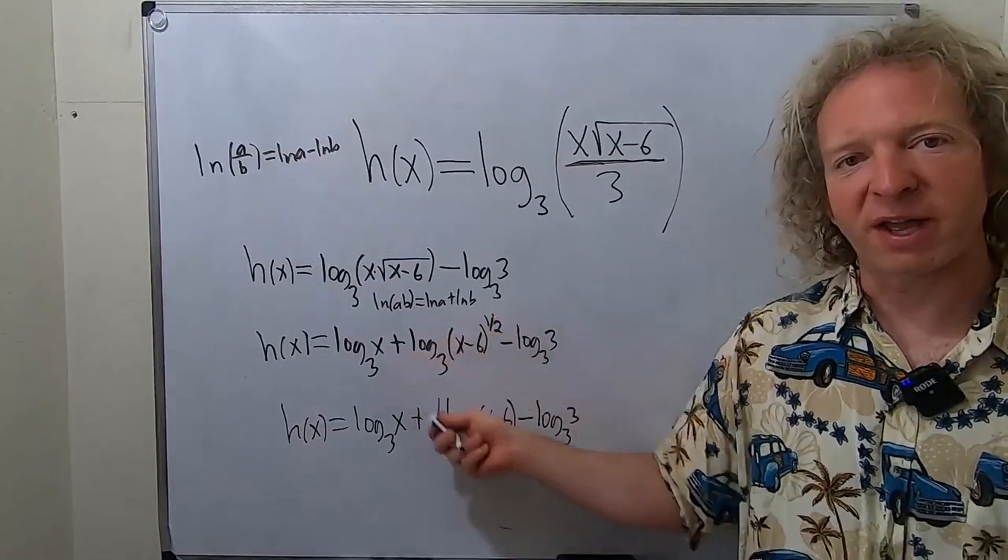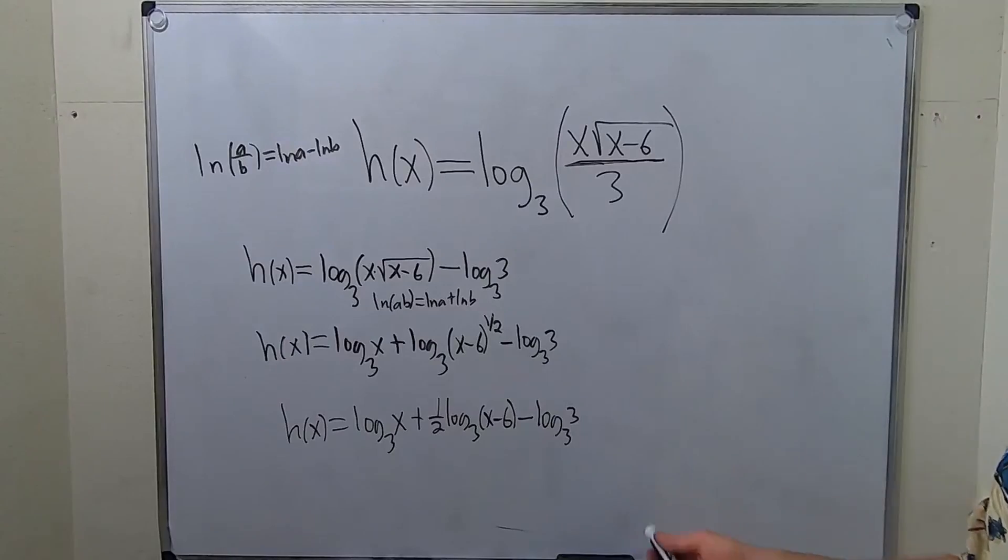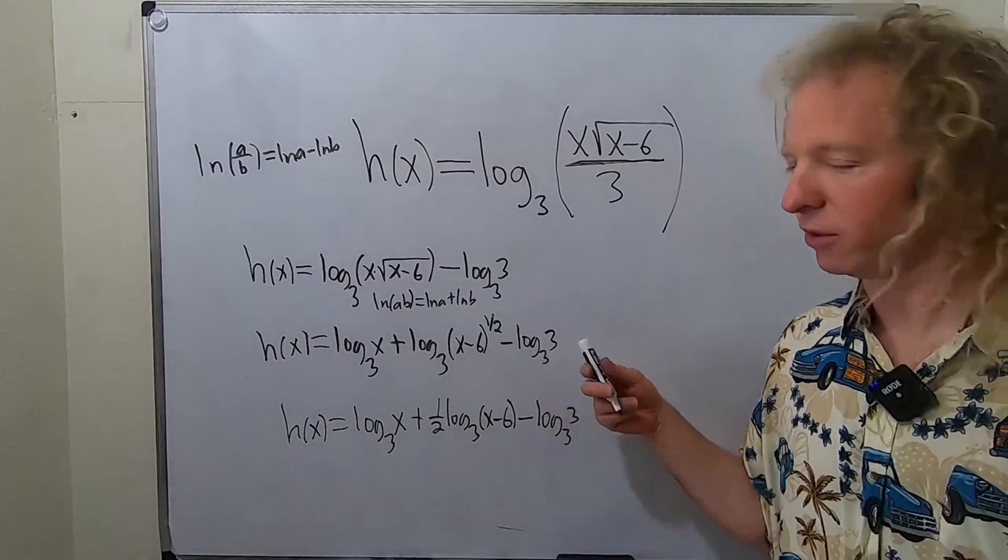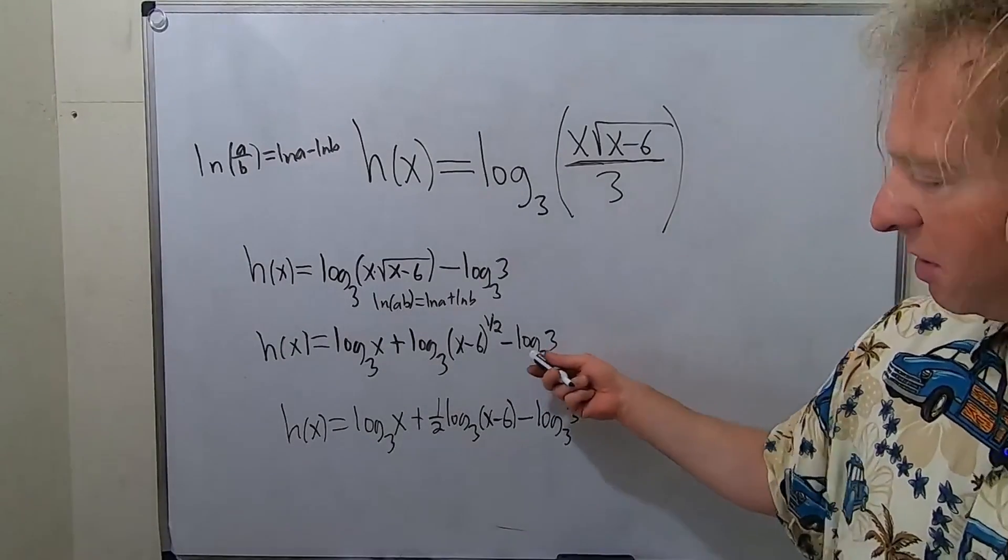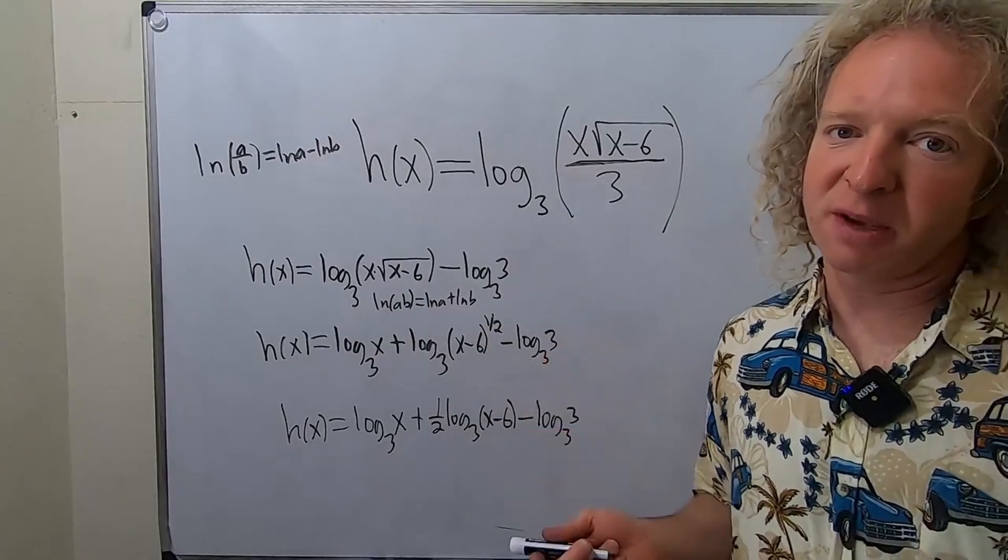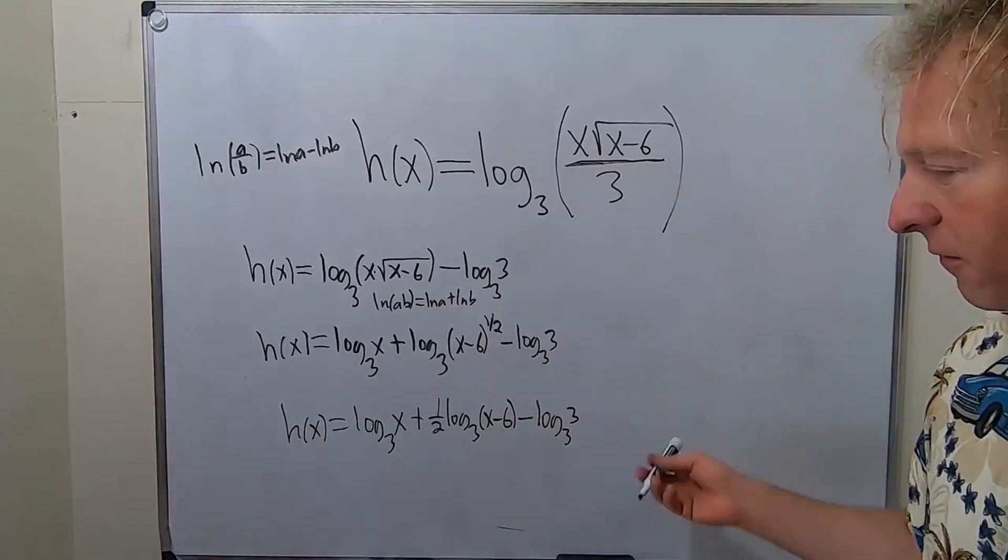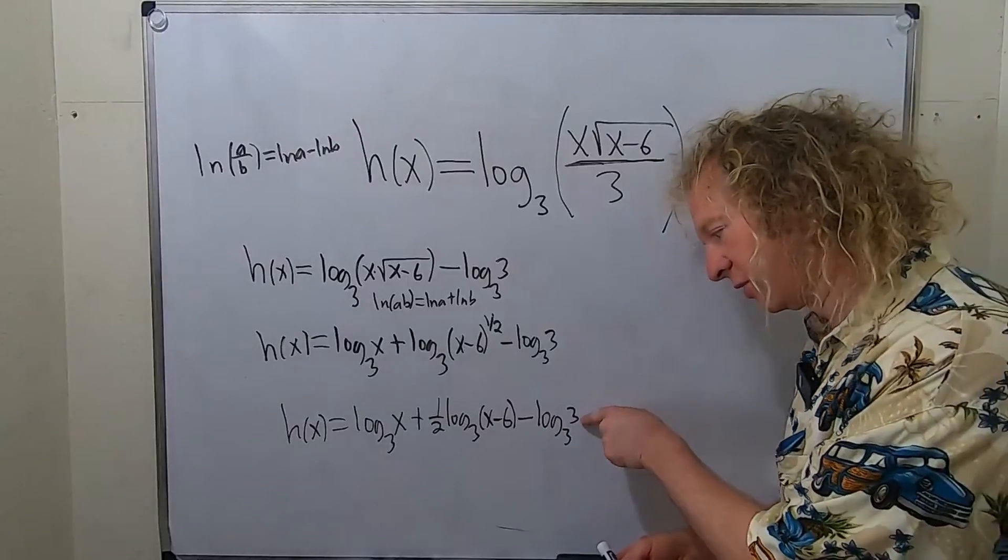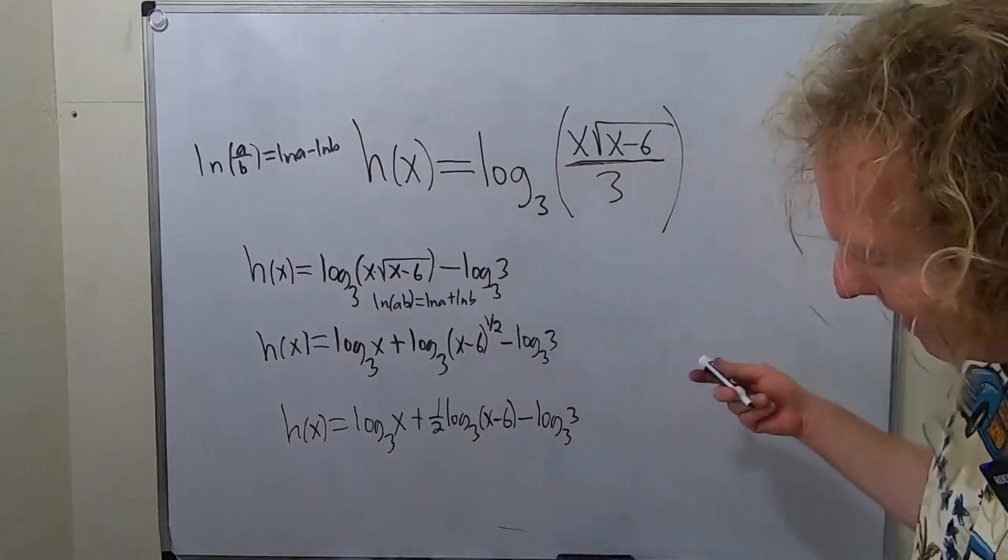And then from here to here, the 1 half went into the front. Now we can take the derivative. You might have noticed that this piece here is just equal to 1. Log base 3 of 3 is just 1. But if you don't notice, it's okay, because when we take the derivative it's going to go away because it's a number.